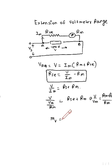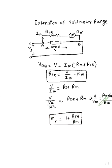We can write: Rse plus Rm. Also, V upon Vm is equal to (Rse plus Rm) divided by Rm. Here, V upon Vm is the multiplying factor for extending the voltage range of the meter. So we can write: Mv is equal to 1 plus Rse upon Rm. This is the multiplying factor for extension of voltmeter range.